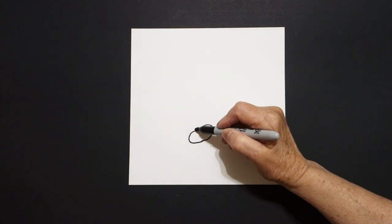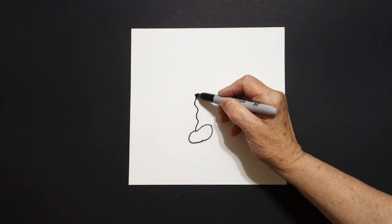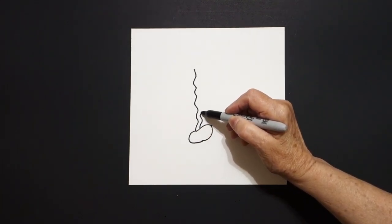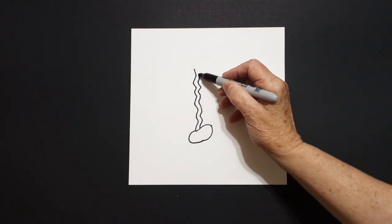Starting right at the top, I draw a wavy, wavy, wavy line up. Right next to it, I'm going to draw another wavy, wavy, wavy line up.